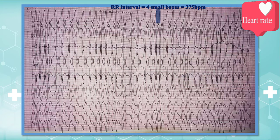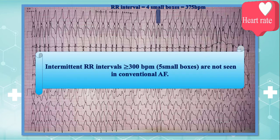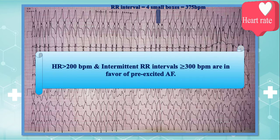In addition, some RR intervals are very short — about 4 small boxes, or 375 beats per minute. Note that intermittent RR intervals of 300 beats per minute are not seen in conventional AF. In summary, a heart rate greater than 200 beats per minute and intermittent RR intervals of 300 beats per minute are very rare in conventional AF and highly favor pre-excited AF.